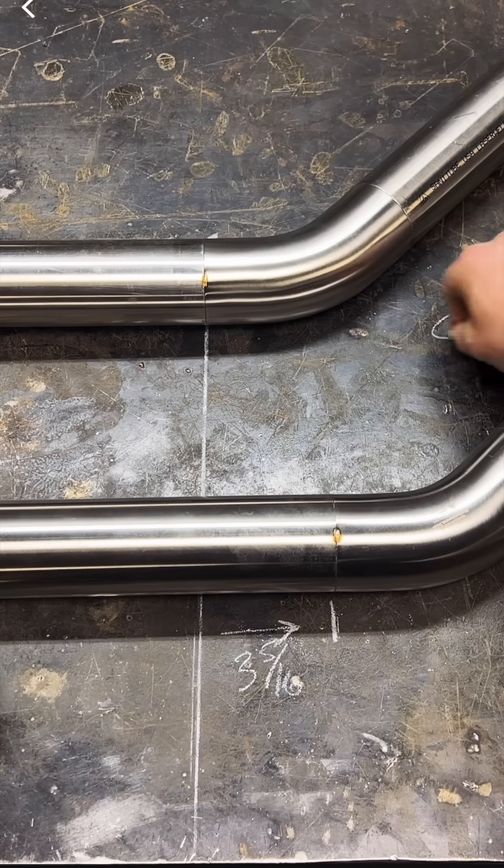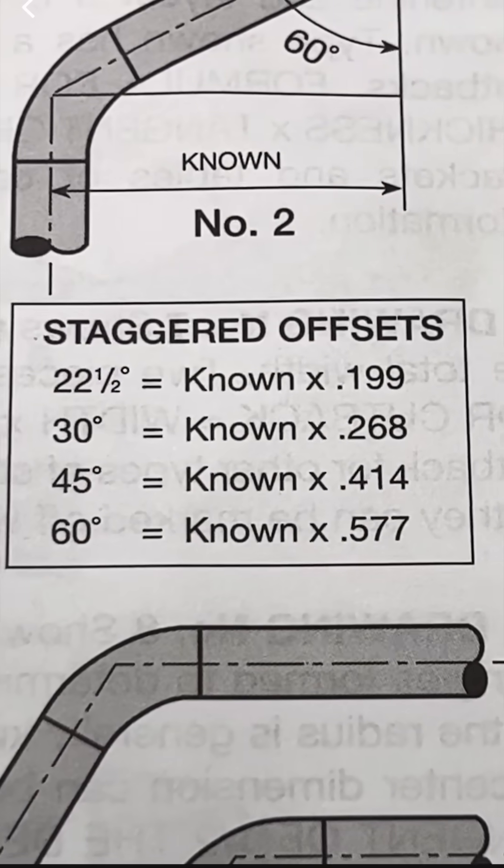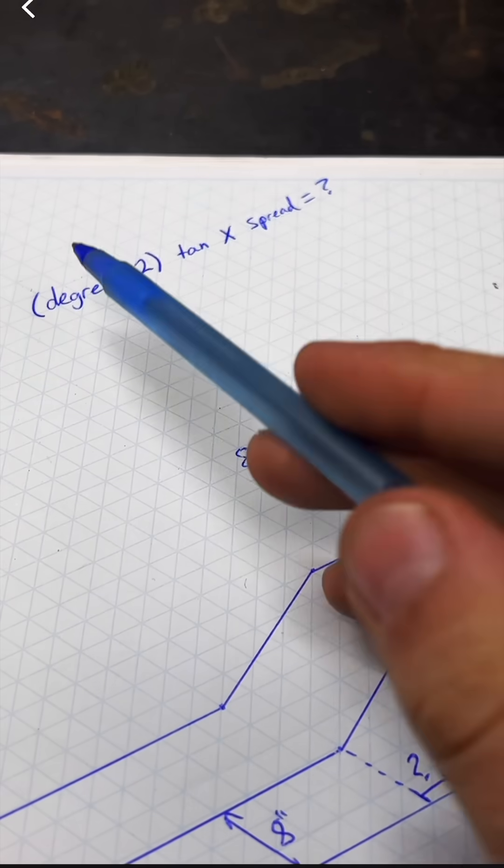These are the most common multipliers straight out of the blue book, but if you're not working with one of those, this formula will help you stagger any degree offset.